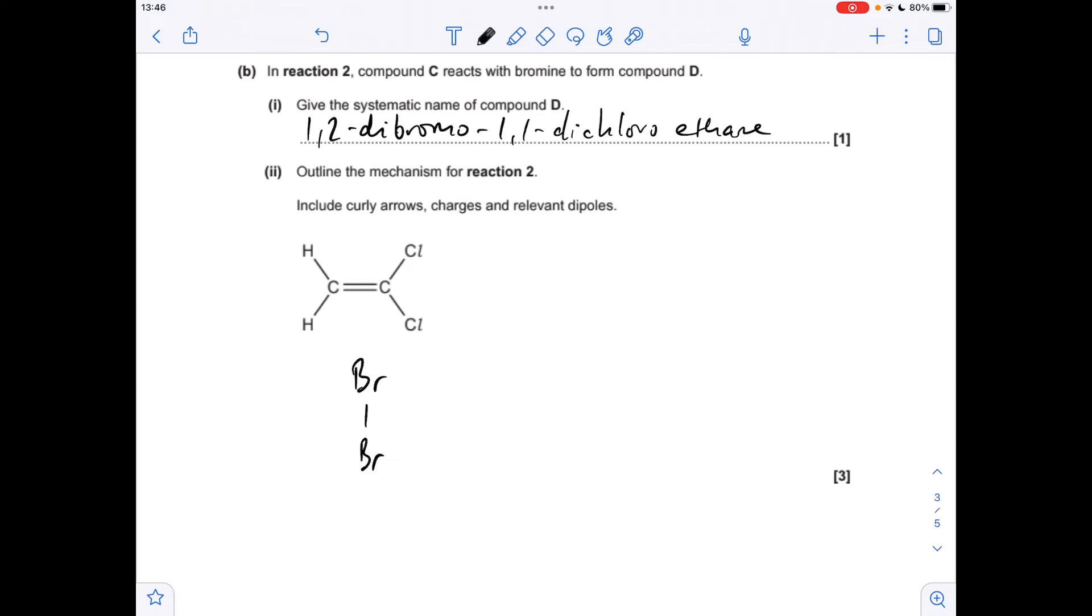Now the mechanism for the reaction between compound C and bromine. So we need a dipole across the bromine molecule. So it's delta plus on the bromine closest to the double bond. Delta minus on the other one. A pair of electrons from the double bond come out onto the delta positive bromine. I'm going to break that bond by heterolytic fission.